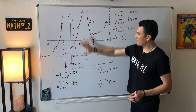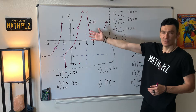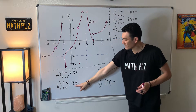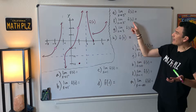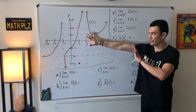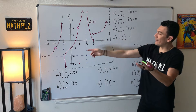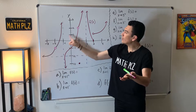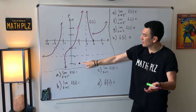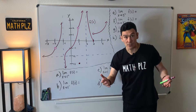So we have this diagram called f of x — whenever it says f of x, it's just referring to this picture. And we have some holes and some solid points. Let's see how this works.